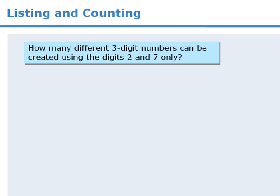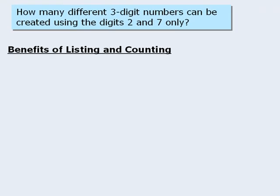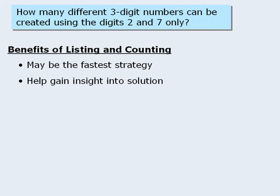If we cannot readily identify a fast way to solve this question, we should consider listing all of the possible outcomes and then counting those outcomes. This approach has two primary benefits. The first is that it may indeed be the fastest strategy, especially if we cannot see any other approaches. The second benefit is that the process of listing possible outcomes may help us gain some insight into a faster way to solve the question.